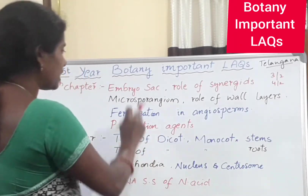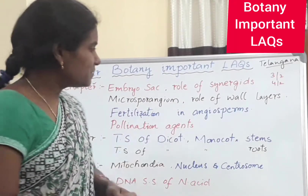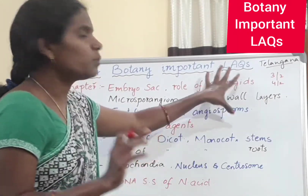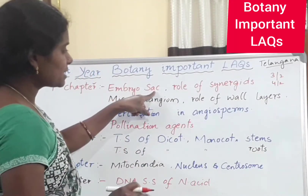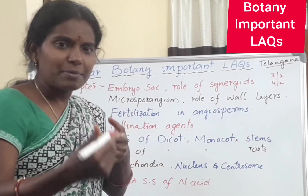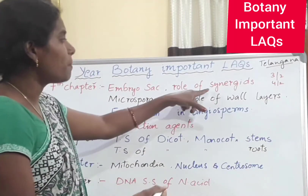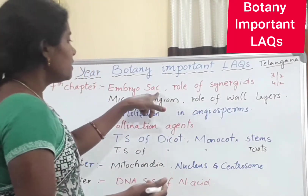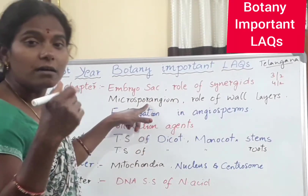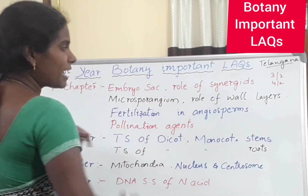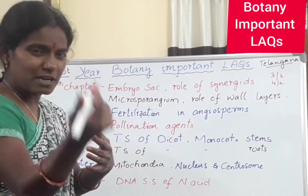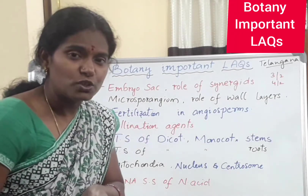Definitely two will be coming easy. What are the four essay questions from Chapter 7? First, structure of embryo sac — structure and role of synergids. The embryo sac structure: what is the egg apparatus, antipodals, and synergids, and what their function is. That is one answer. The second is the microsporangium — the arrangement and function of wall layers — that is one more essay question.